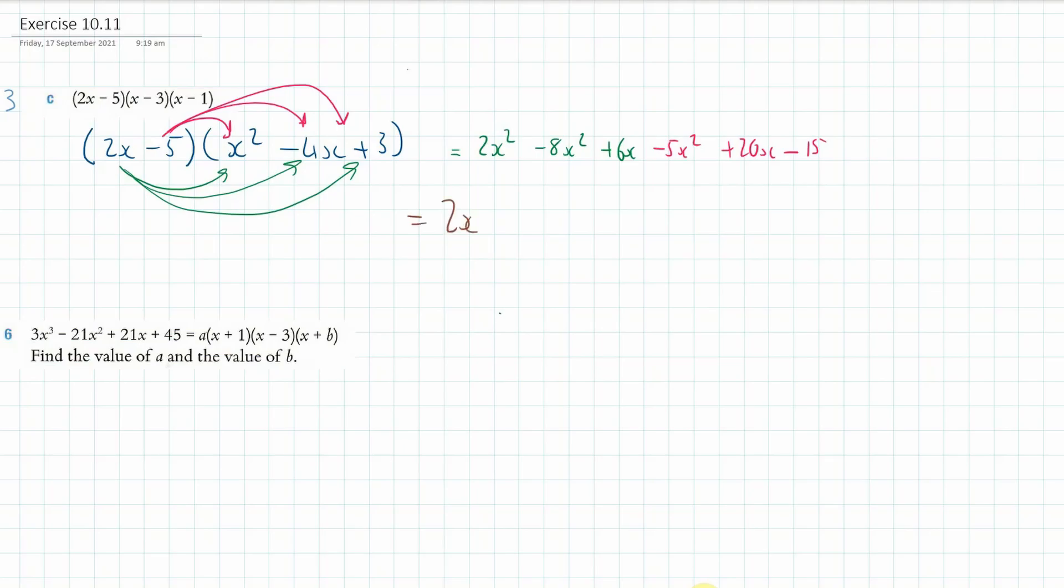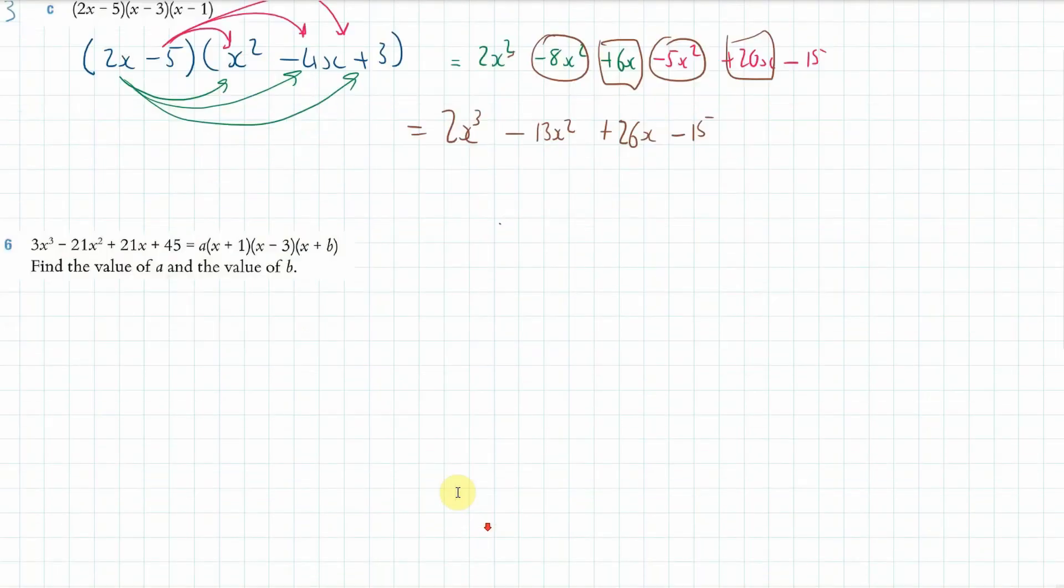So we've got the 2x—oh sorry, that should have been 2x³ up here, so I made a mistake there. 2x³, then we gather our x² terms so it should be -13x², then we gather our x to the power of 1 terms, so plus 26x, and then -15 at the end there. Okay, I think that's fine.